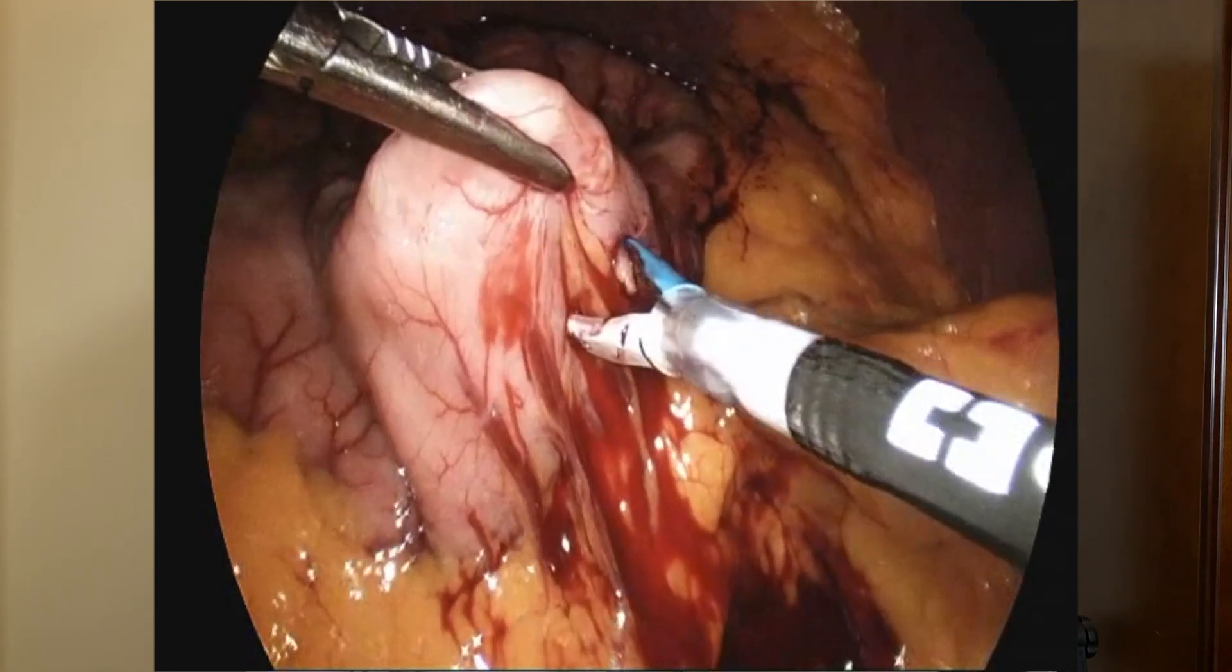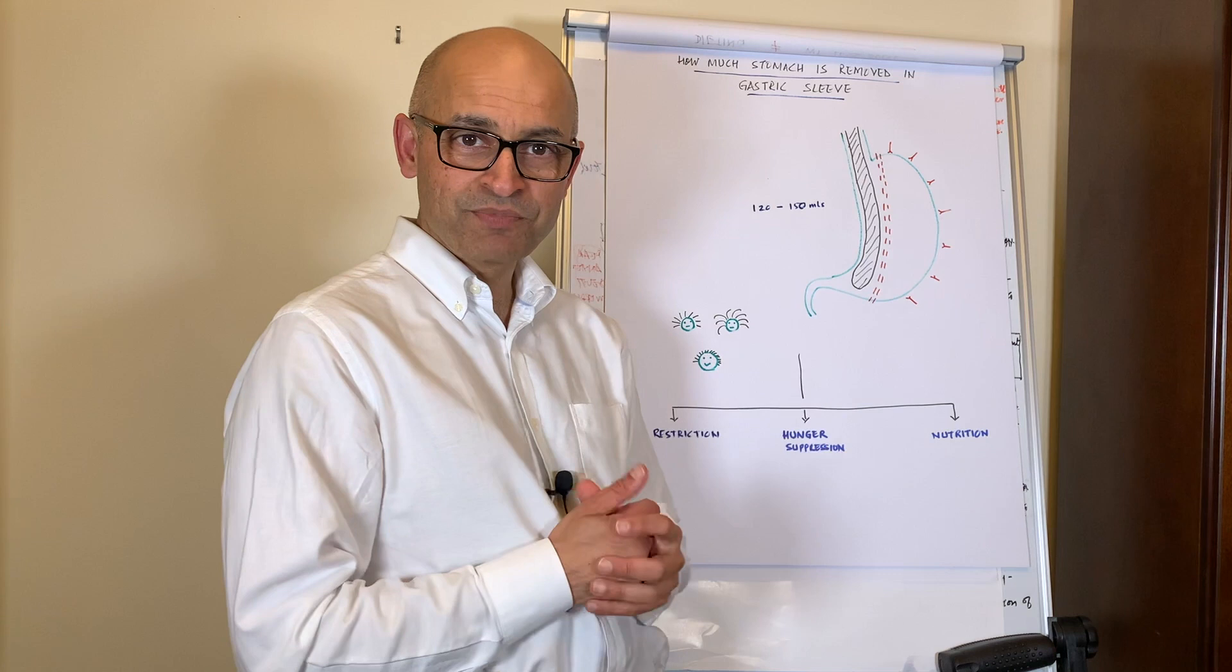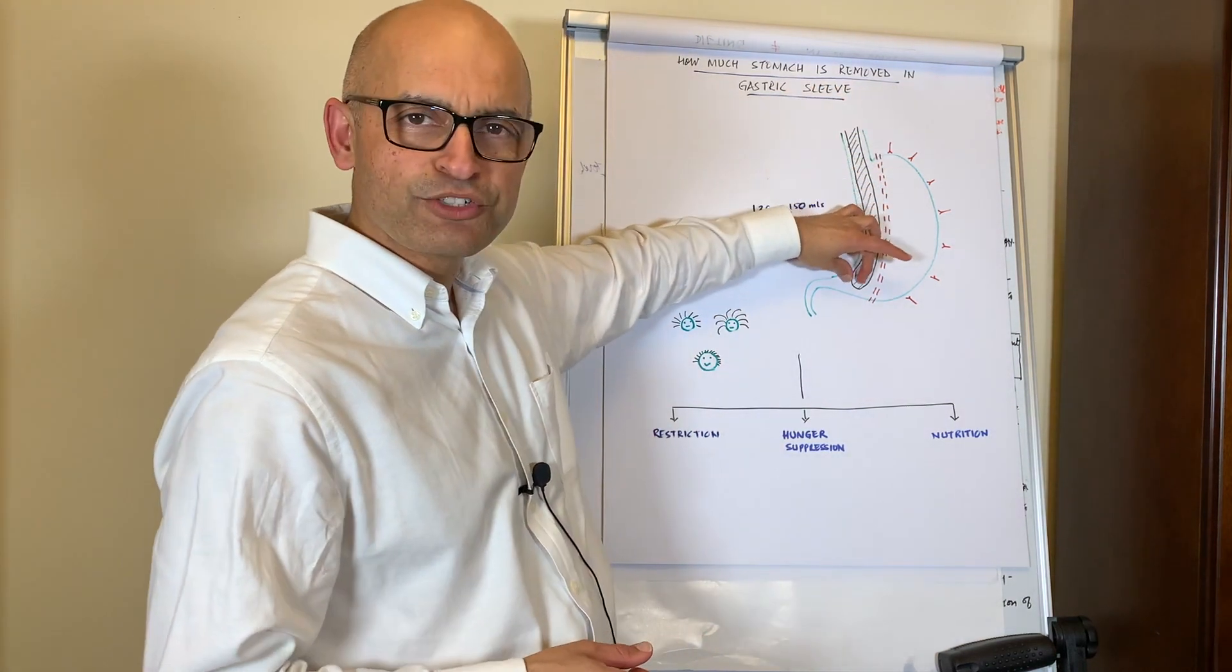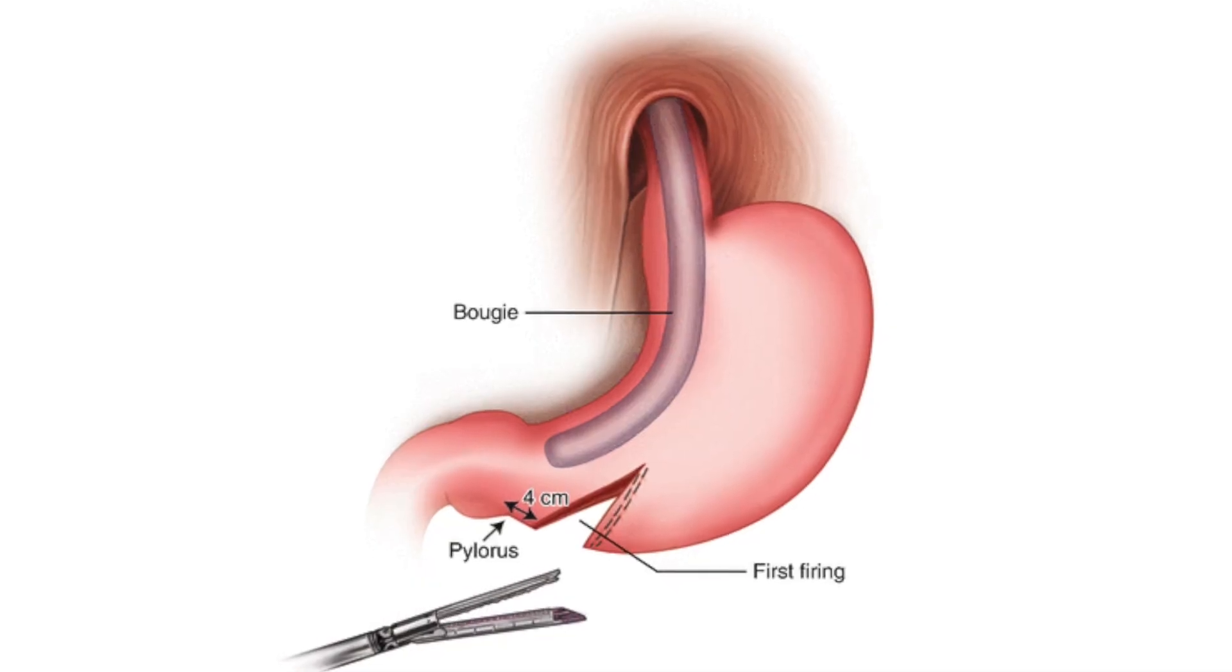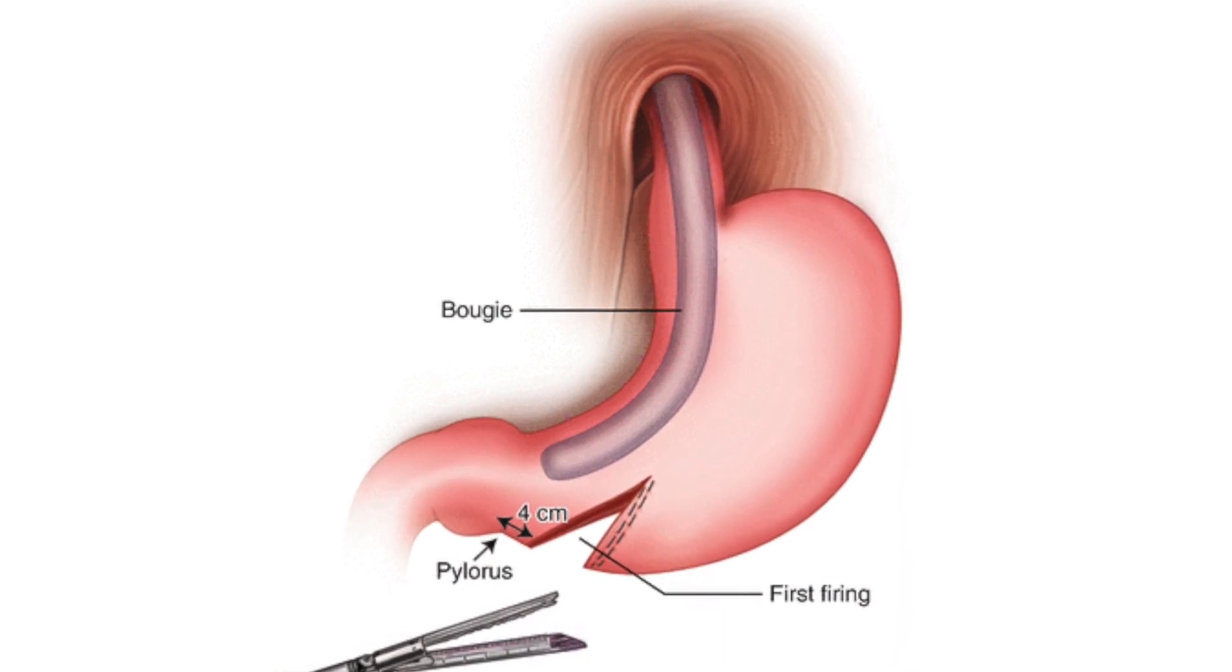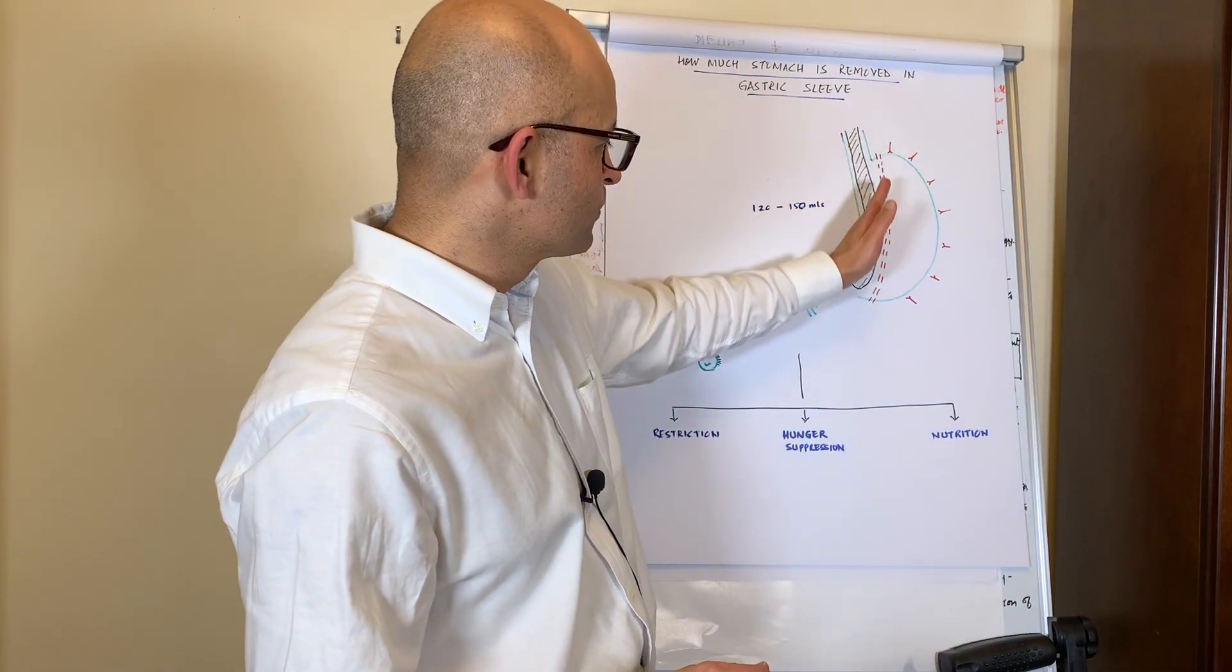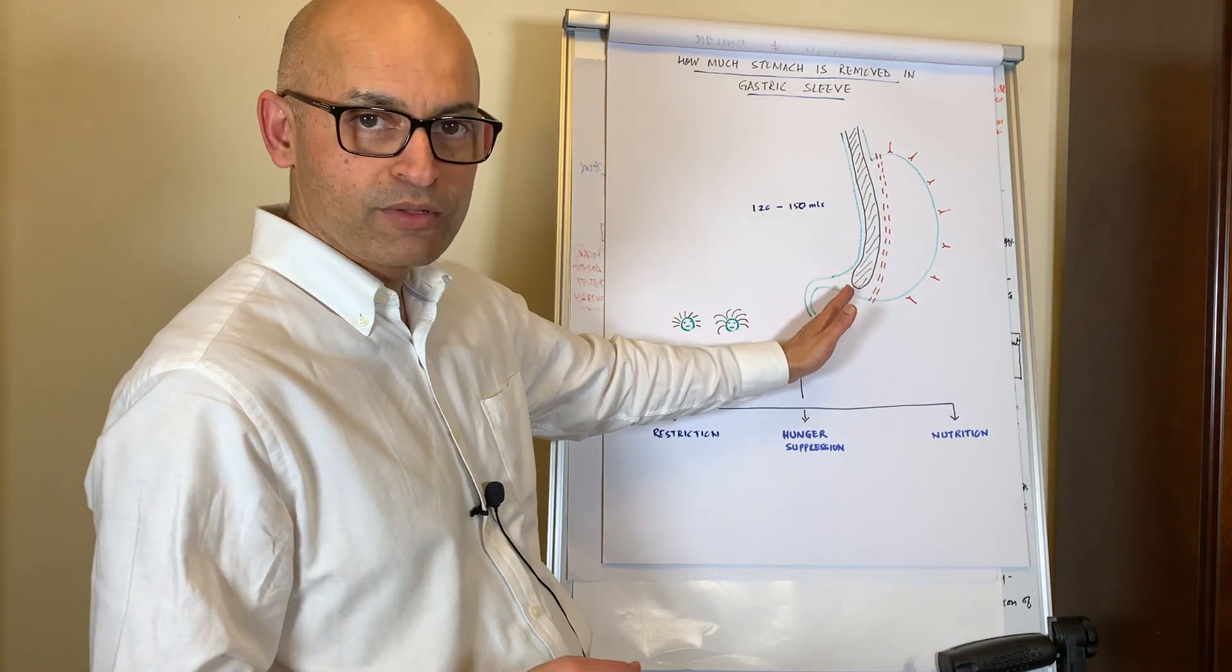The next step is that of putting in a special calibration tube, which is like a long tube that allows us to leave a set amount of stomach behind that we can measure, and it is consistent in every case. Once that tube goes in, as you can see it is going all the way down to the bottom end of the stomach.